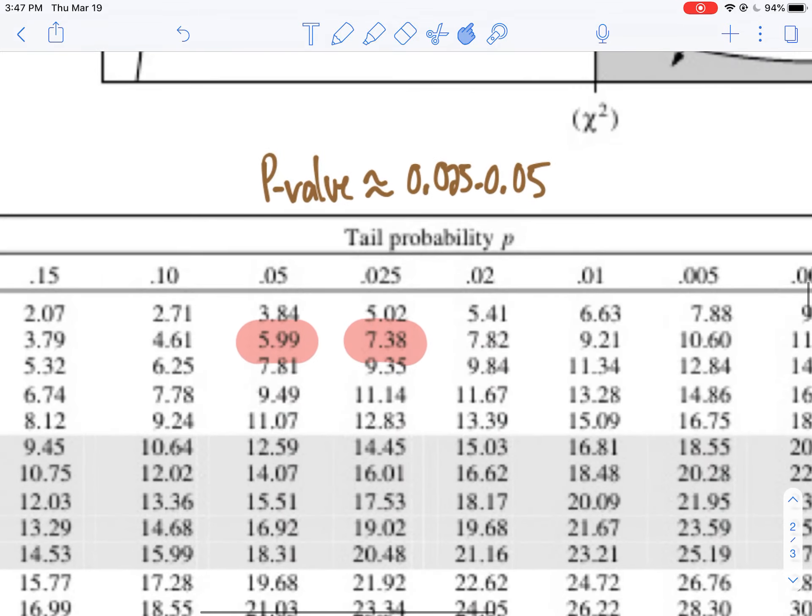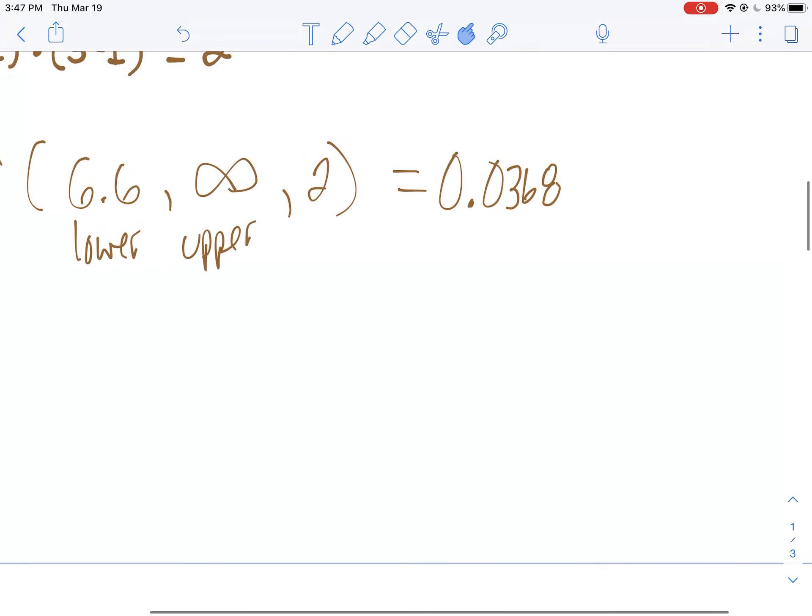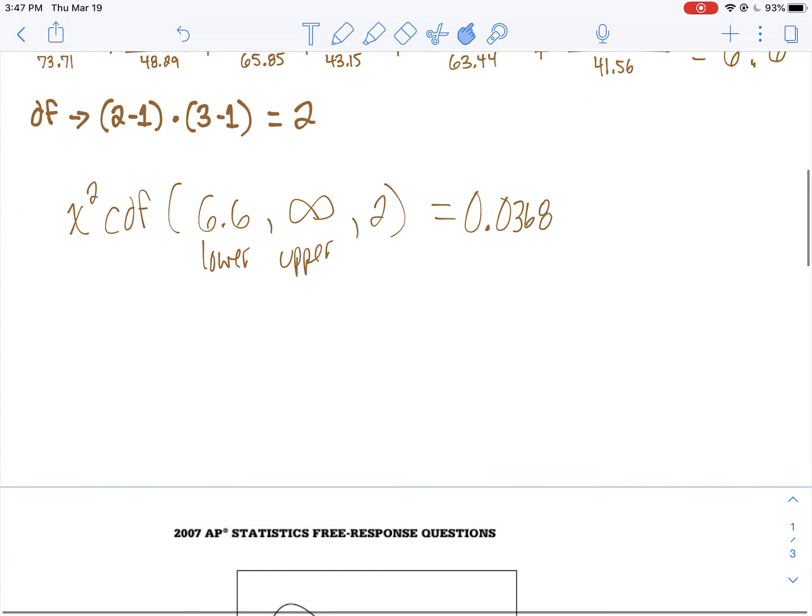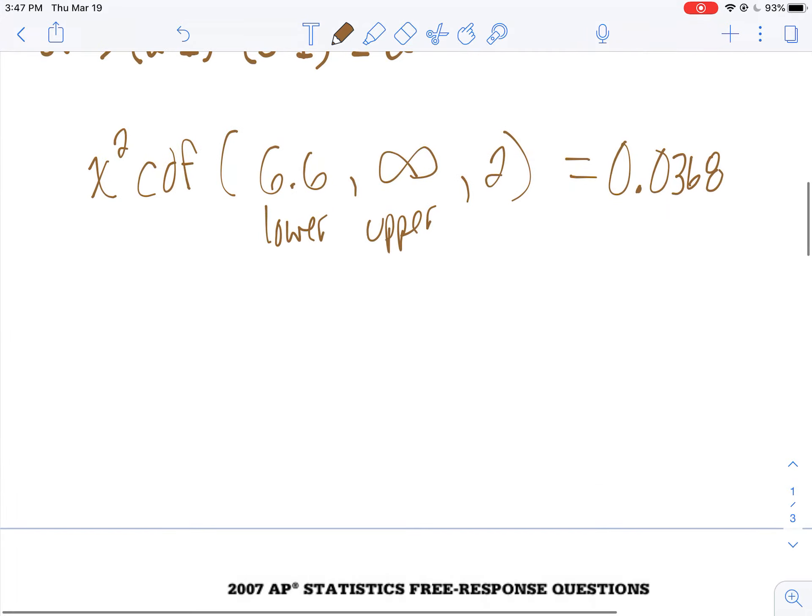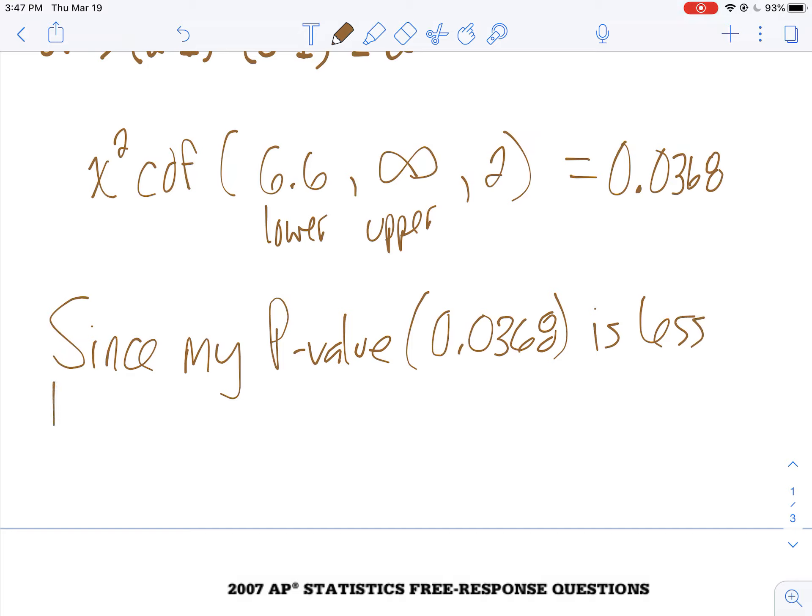But nonetheless, we got a p-value here. We know our p-value is going to be less than 0.05. So what does that mean? I can reject my null hypothesis. So I'm going to write my nice little statement here. Since my p-value, 0.0368, is less than my significance level, I have enough evidence to reject my null hypothesis, to reject the H0.